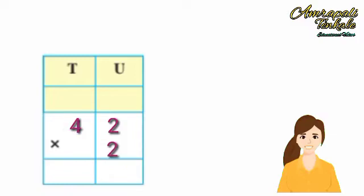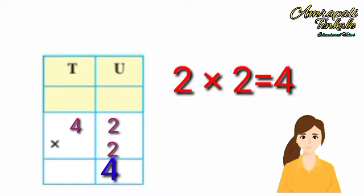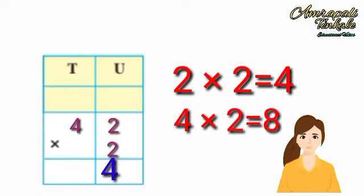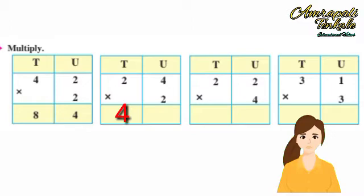42 multiply by 2. First, multiply 2 by 2 is equal 4. Let's write in the unit's place. Then multiply 4 in the 10th place by 2. 2 fours are 8. Our product will comes 84. Similarly, 24 multiply by 2 is equal to 48. 22 multiply by 4 is equal to 88. 31 multiply by 3 is equal to 93.